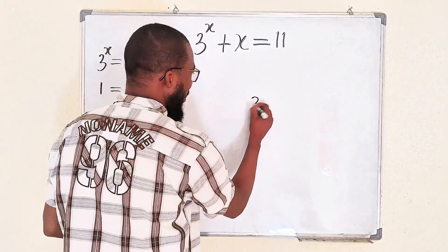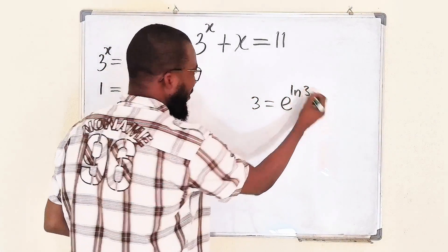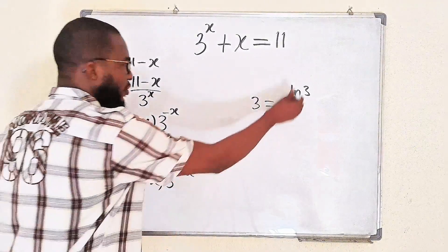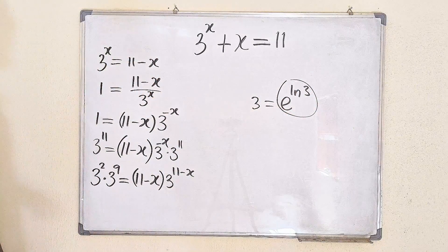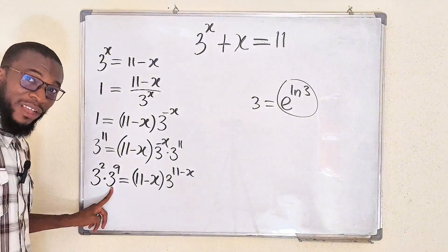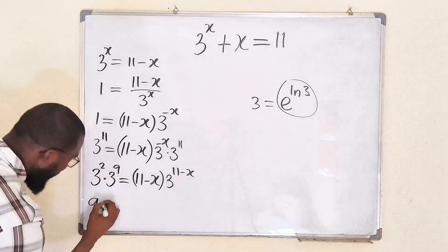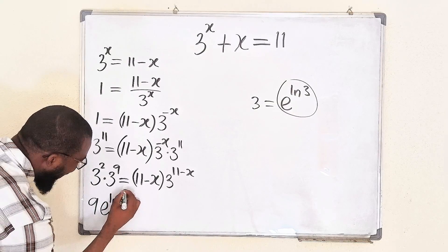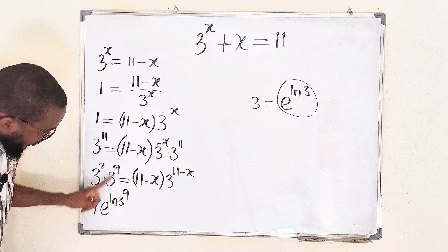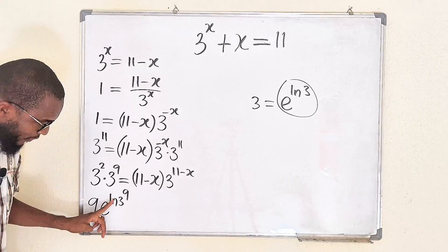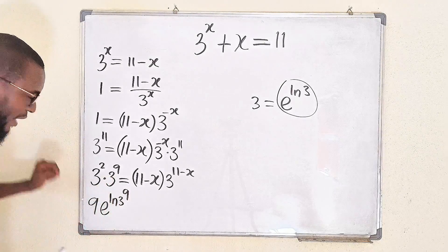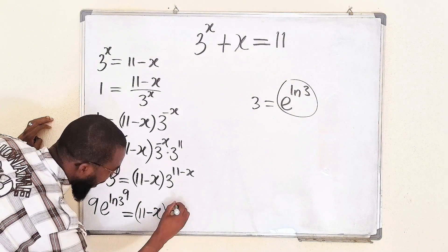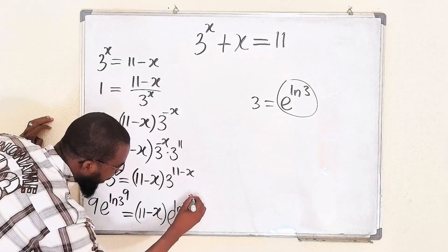This 3 can be expressed as e to the natural log of 3, because e will cancel natural log, and eventually we have 3 back. So instead of this 3, we replace it with e to the natural log of 3. This 3 to the power of 2 is 9, multiplied by e to the natural log of 3 to the power of 9. This is equal to 11 minus x, times e to the natural log of 3 to the power of 11 minus x.